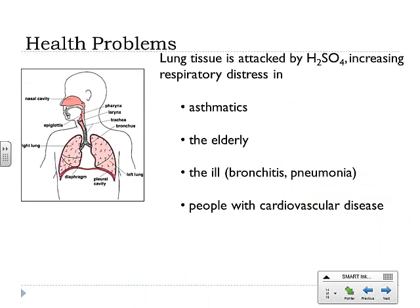What about health problems? Why is acid rain bad for health? Acid burns can happen inside of you. If you breathe in vapor containing H2SO4 or even SO2 vapor, where it finds water in your lungs, your lung tissue gets attacked. When your lung tissue gets attacked by acid, that causes respiratory distress. People who are asthmatic, elderly, already ill, or have cardiovascular disease are going to notice this a lot more than healthy people, but it does affect everybody.